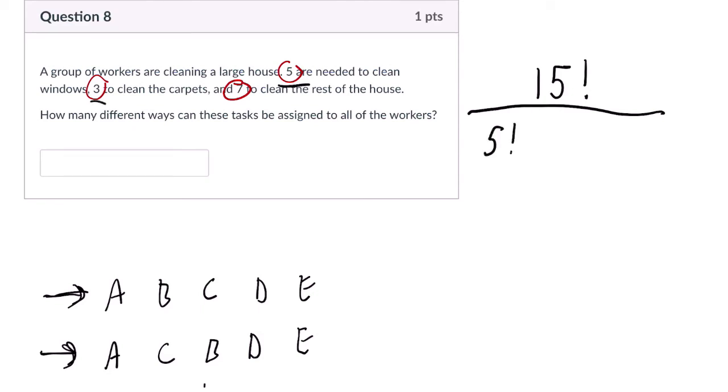Then the same applies for the three carpet cleaners. I want to divide by three factorial, and then seven factorial there as well.